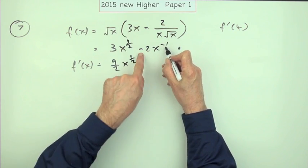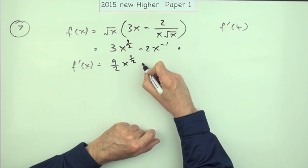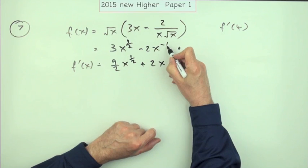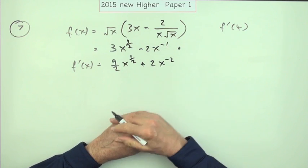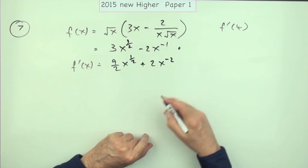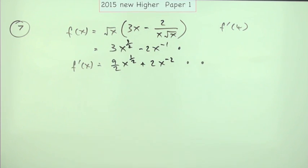Second one: multiply by the power, negative 2 times negative 1 will be plus 2. Take one off the power, drops down to negative 2. And that gets you a mark, so in fact there were two marks there.